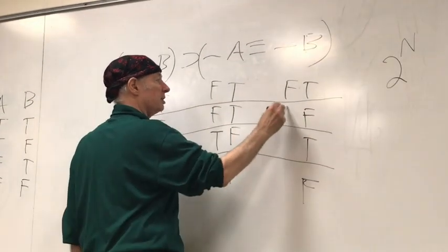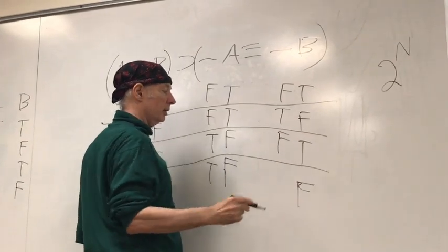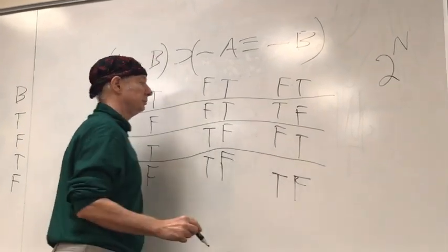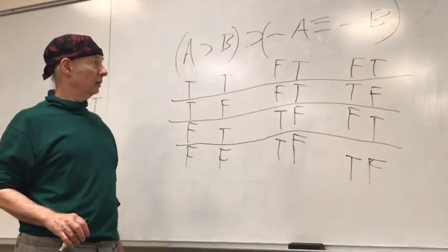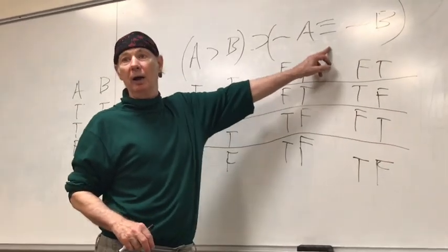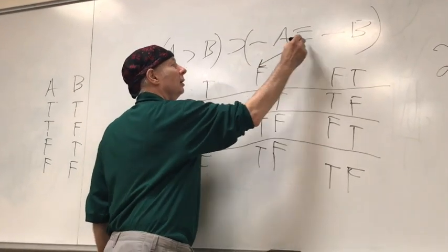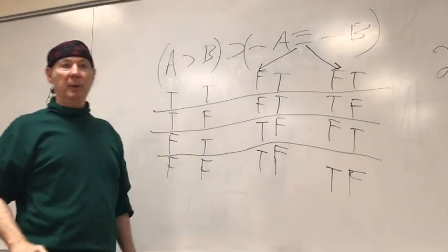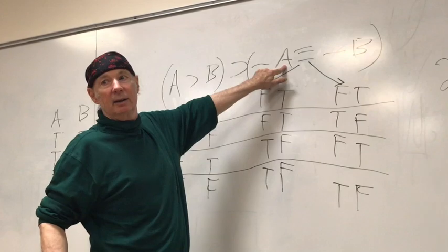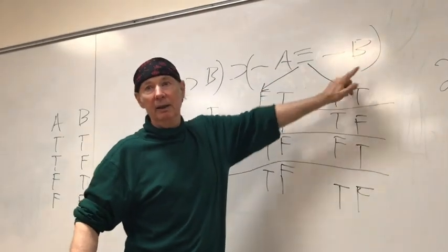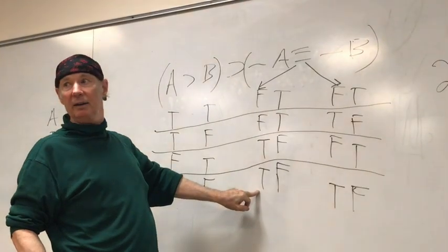We'll do the same for squiggle B: squiggle F is T, squiggle T is F, squiggle F is T. Now we are going to triple bar that column to this column, because the triple bar connects squiggle A to squiggle B. The truth value of squiggle A is in that column.